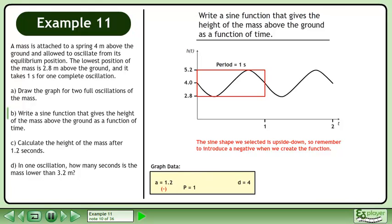The sine shape we selected is upside down, so remember to introduce a negative when we create the function. The B value is 2π.